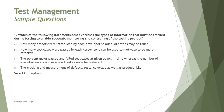Which of the following statements best expresses the types of information that must be tracked during testing to enable adequate monitoring and control of the testing project? We know from the monitoring and control tutorials that there are certain metrics which can be measured. We know the primary dimensions, and that's a very straightforward answer if you remember the metrics.